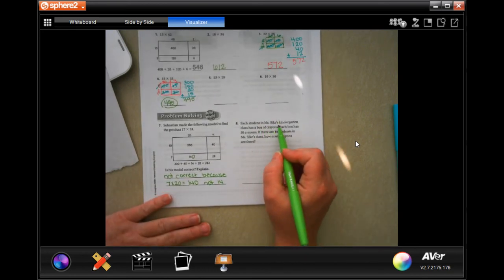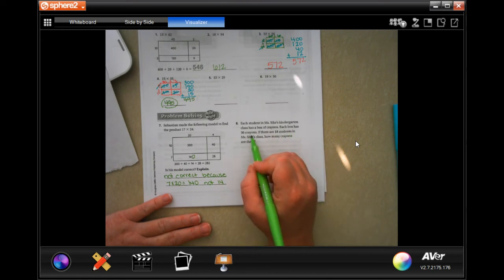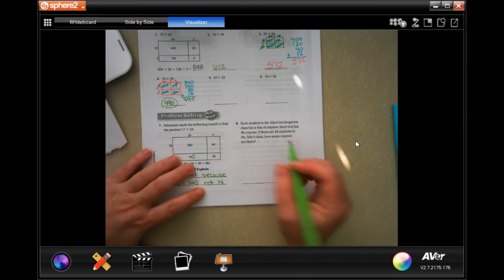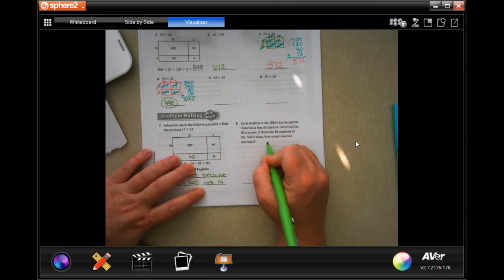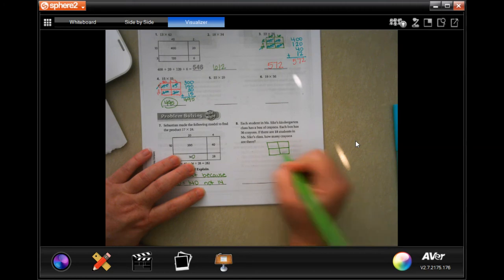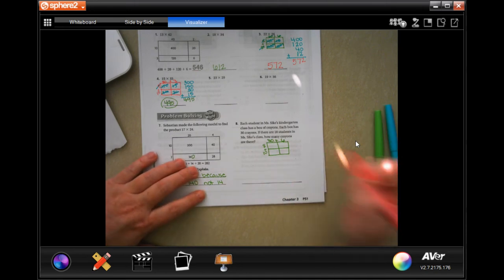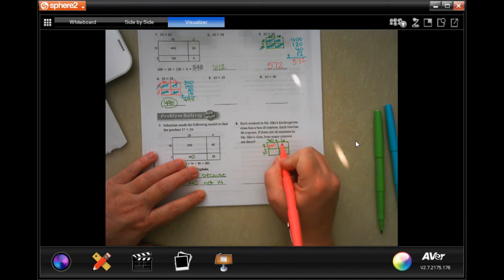Each student in Ms. Sykes kindergarten class has a box of crayons. Each box has 36 crayons. If there are 18 students, how many crayons? So make our box. Now, 36 is just 30 plus 6. And 18 is just 10 plus 8. So 8 times 3 is 24. I have to add that 0. 8 times 6. 6 times 8 is 48.